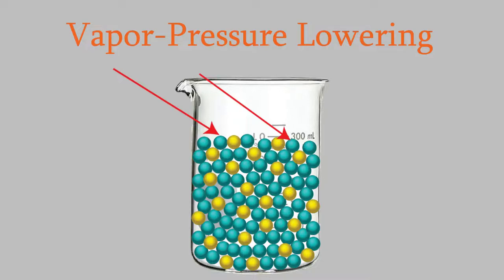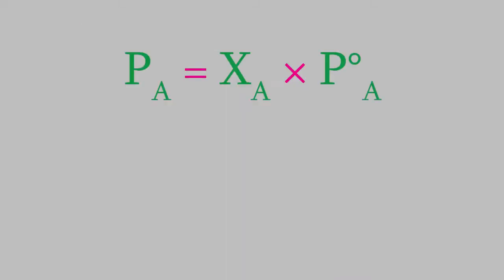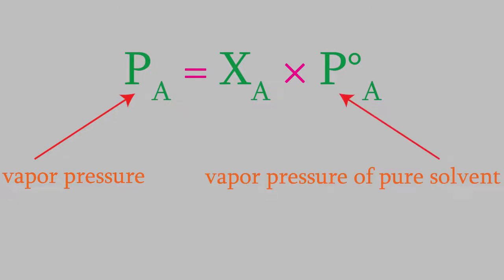Remember, a colligative property is one that depends on the concentration. Here's an equation that we can use to determine the vapor pressure. We'll call the solvent A. PA is the vapor pressure of the solution, and this is the vapor pressure of the pure solvent. You might recognize this symbol as the mole fraction, which we learned about in the last video. So XA is the mole fraction of the solvent. Notice that this equation makes a lot of sense.